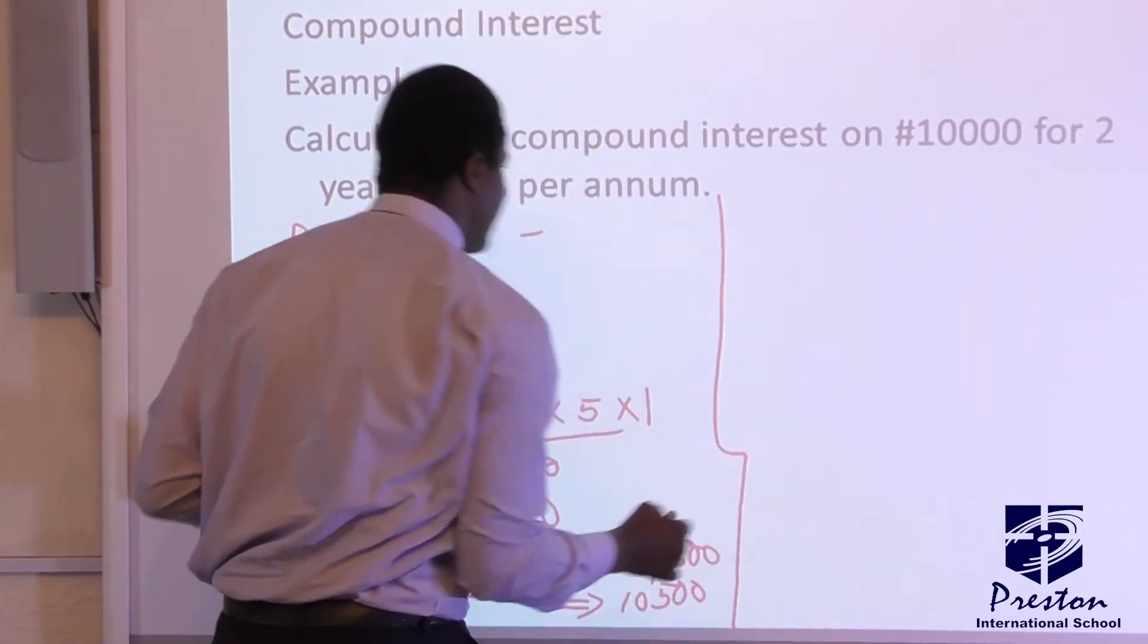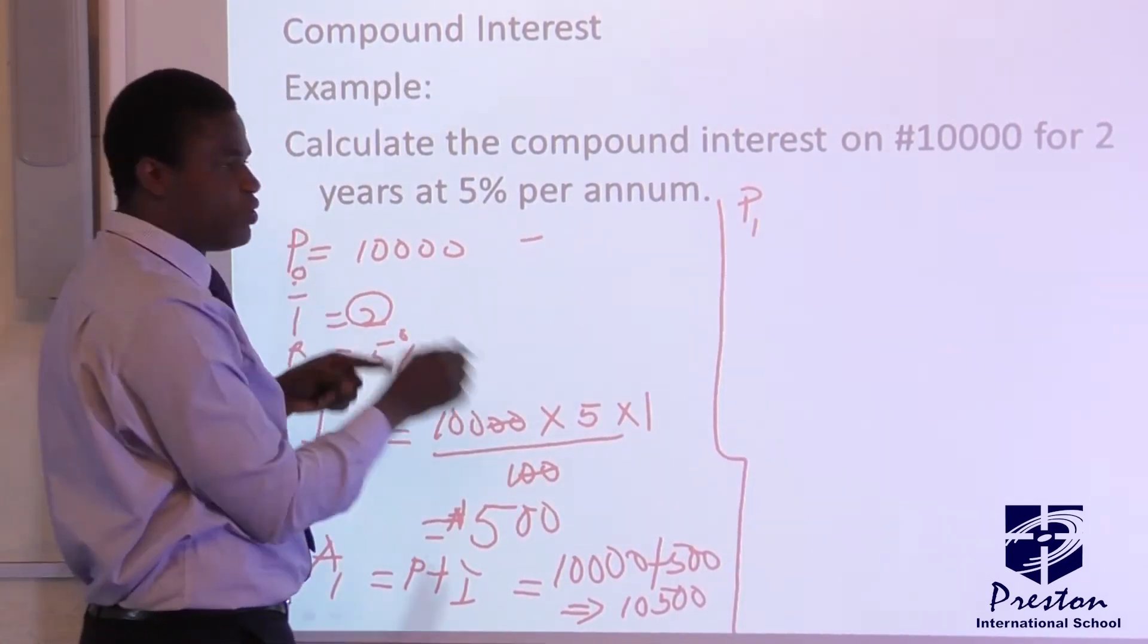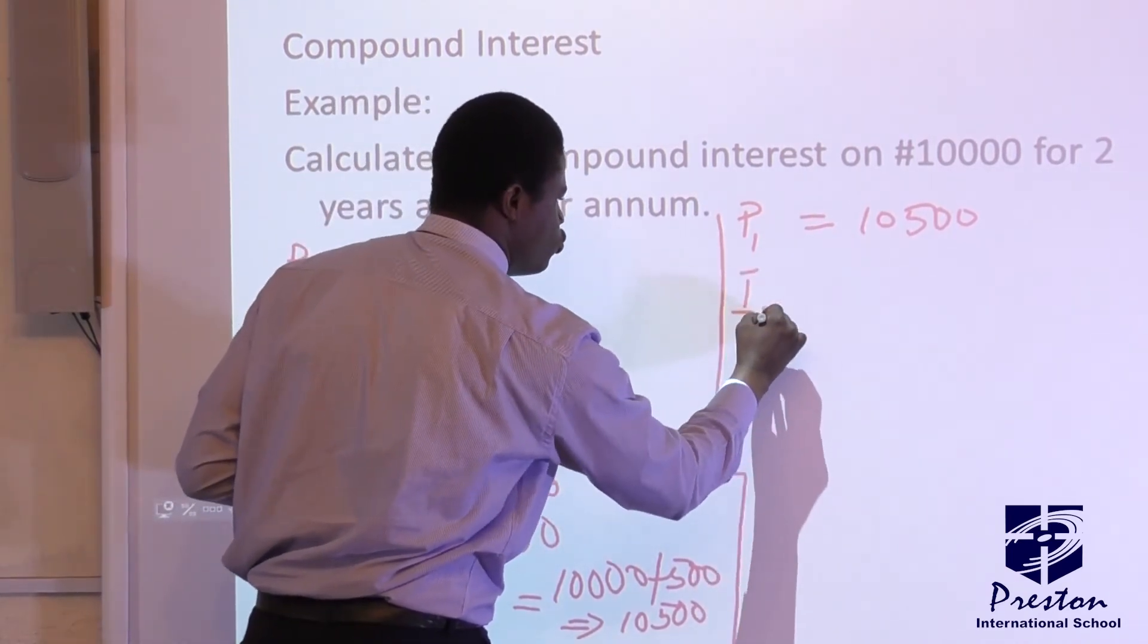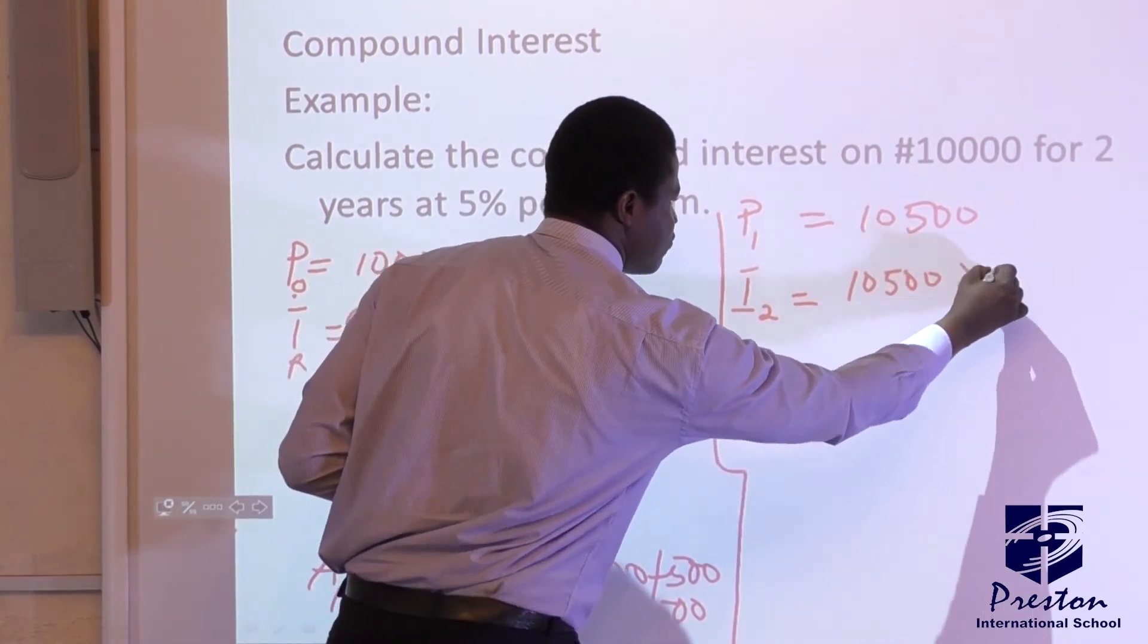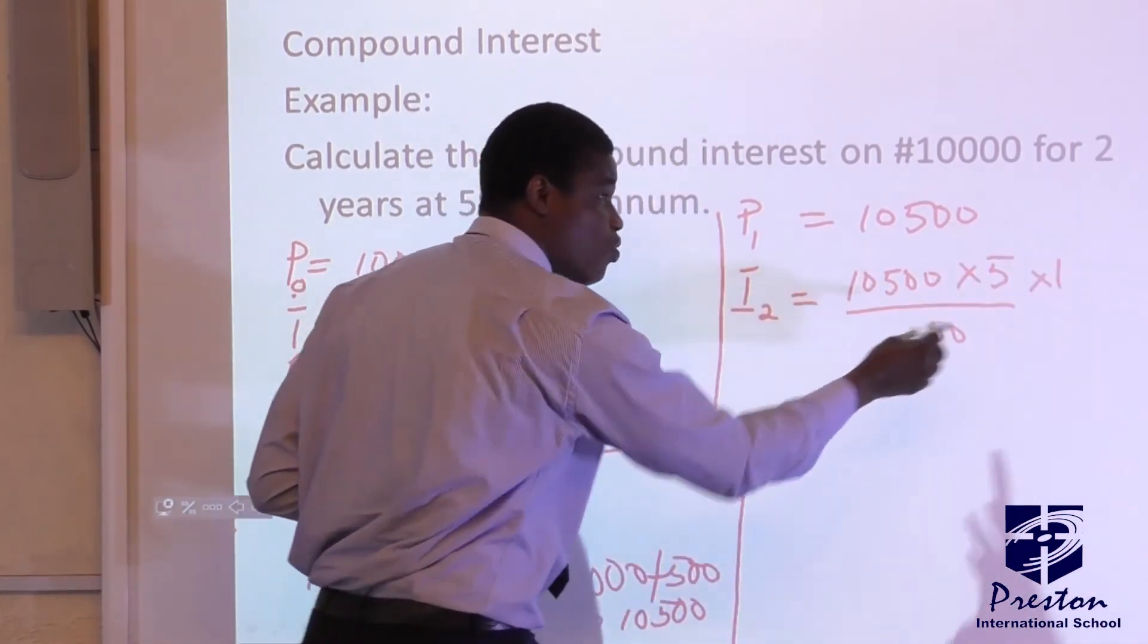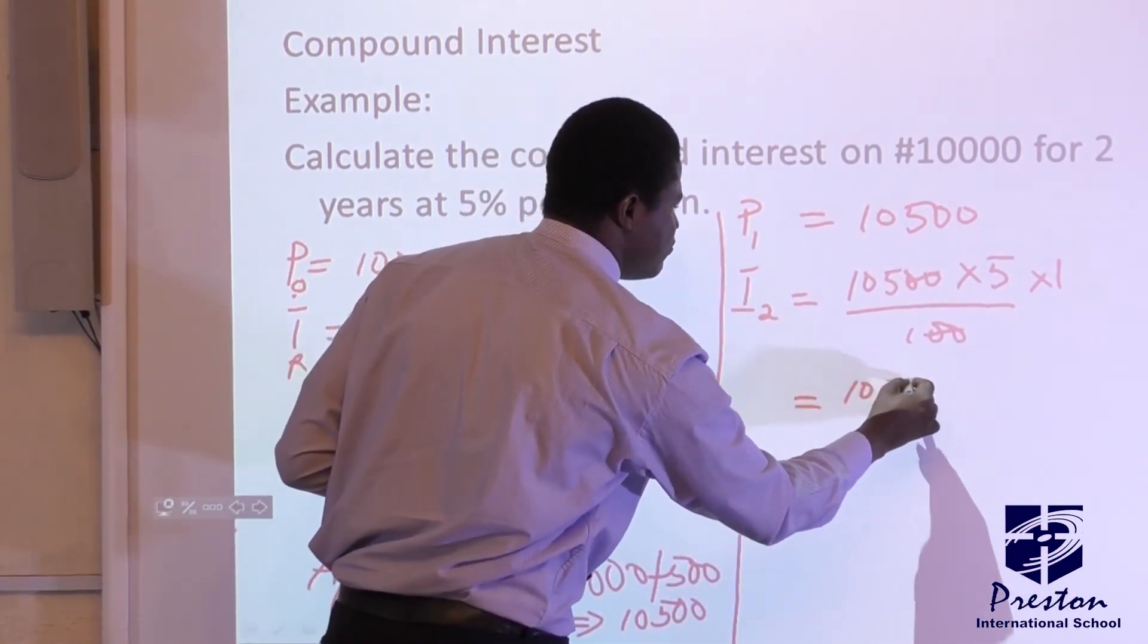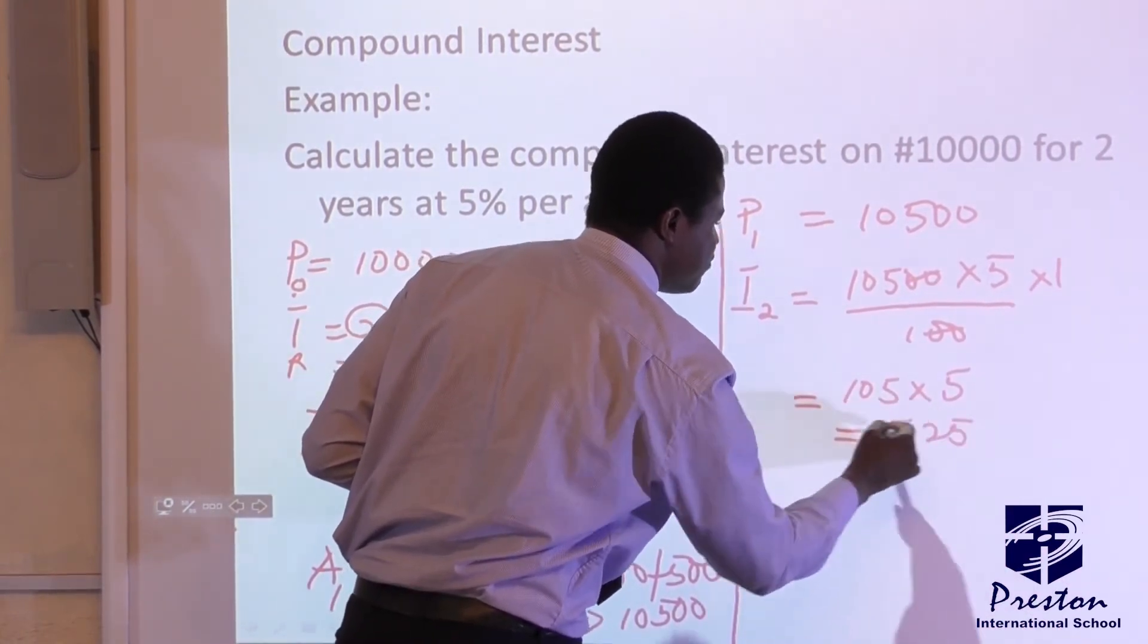So when we are moving to second year, your principal 1, that is why we use not the other time, but this time around the principal 1, will be 10,500 Naira. So our interest 2 will be equal to 10,500 Naira times 5 over 100. If you like, you can put this one here, because that one is for the year. So in this case, again, we go with this. So you have 105 times 5, which will surely give us 525 Naira.